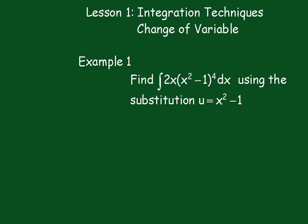First of all, I set up the integral. So we'll have that I is equal to the integral of 2x(x² - 1)⁴ dx. We know that u equals x² - 1.